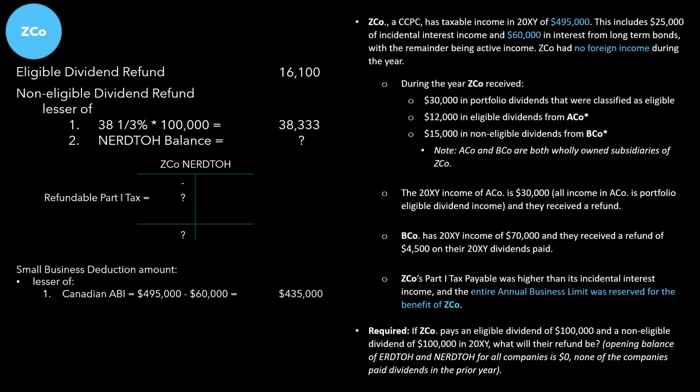Second, we take taxable income — if we had active foreign business income we would subtract four times the foreign tax credit, but in our case there's no foreign income, so no foreign tax credit. That second item is just $495,000. Third is the annual business limit, which as of this recording is still $500,000. The least of these three amounts is $435,000.